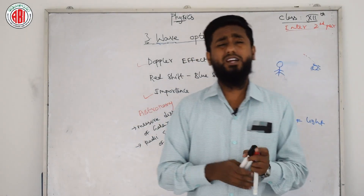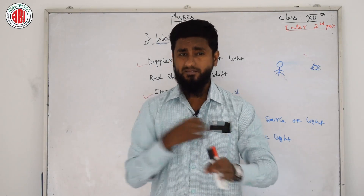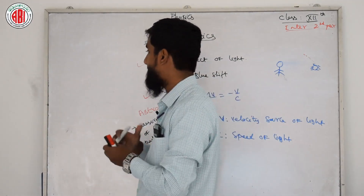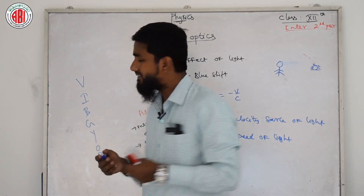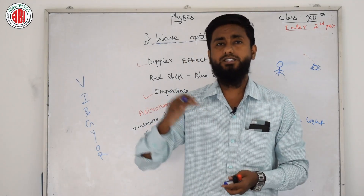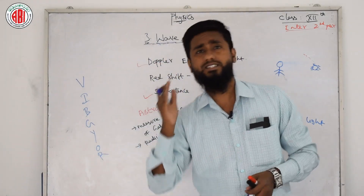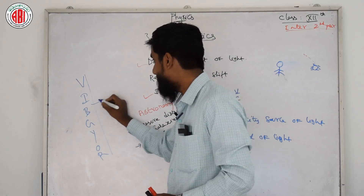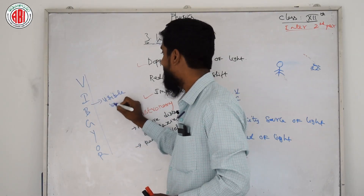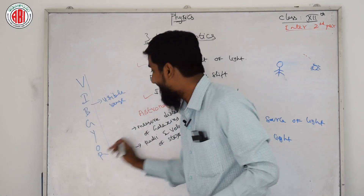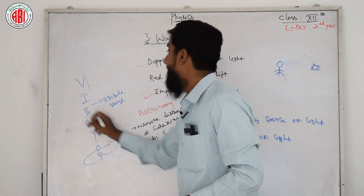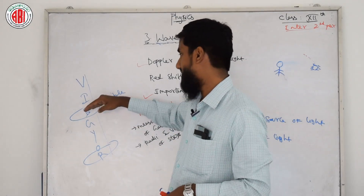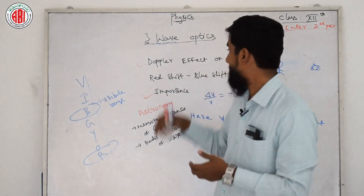Now we need to know something about electromagnetic waves and visible light before learning redshift and blueshift. The visible range of light — what we can see — includes violet, indigo, blue, green, yellow, orange, and red. Red shift is related to the color red, and blue shift is related to the color blue. Different wavelengths correspond to each of these colors.